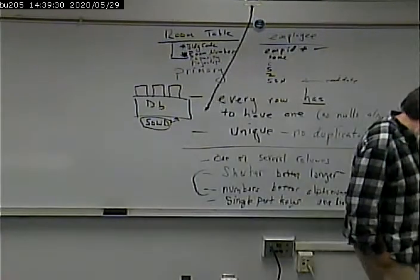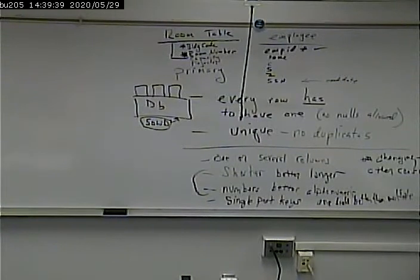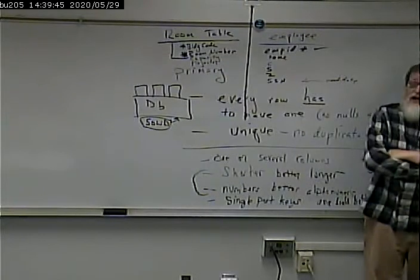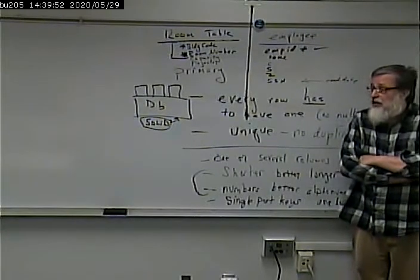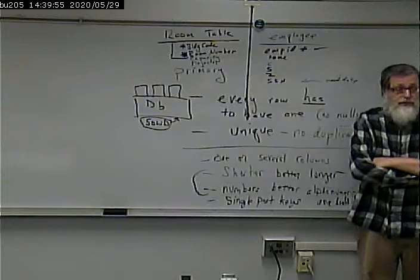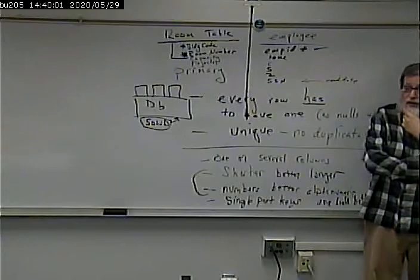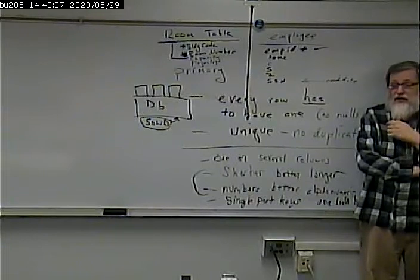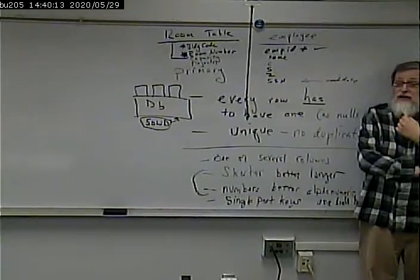What is an index? An index allows us to look up quickly by a particular field. The best analogy: imagine you call some company about your bill. The first thing they ask is your account number — because it's the primary key, the easiest way to look things up. Of course, I don't know the account number, so they ask something else — telephone number, social security number, name and city.